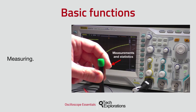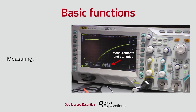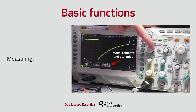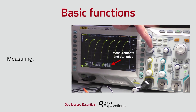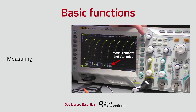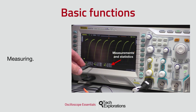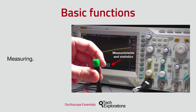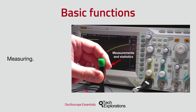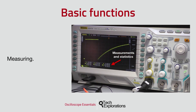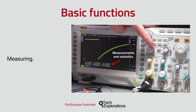Modern oscilloscopes can measure multiple parameters of a live signal and show the results on the screen. In this video clip, the oscilloscope is automatically measuring the frequency, period and the maximum voltage of the waveform on the screen. It's doing this live and updates these measurements multiple times per second. You can see the results of the measurements just below the graph.